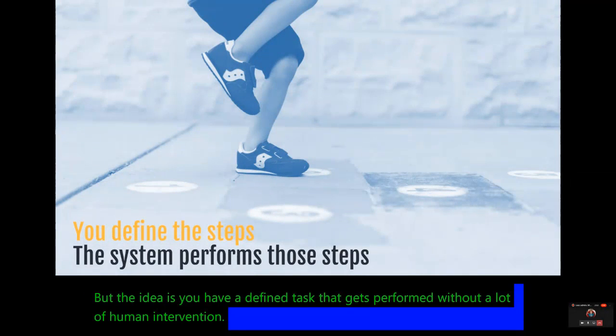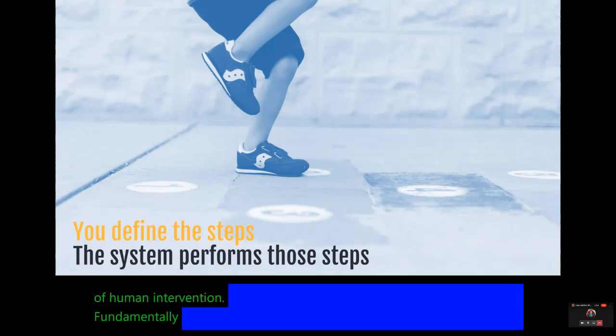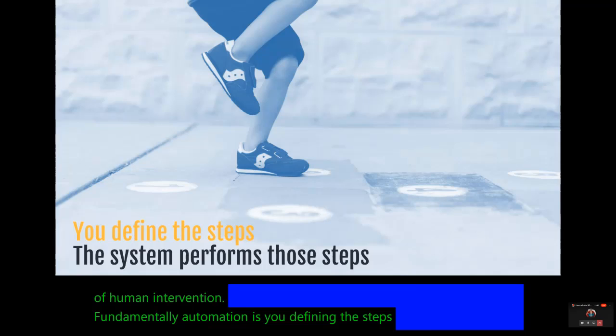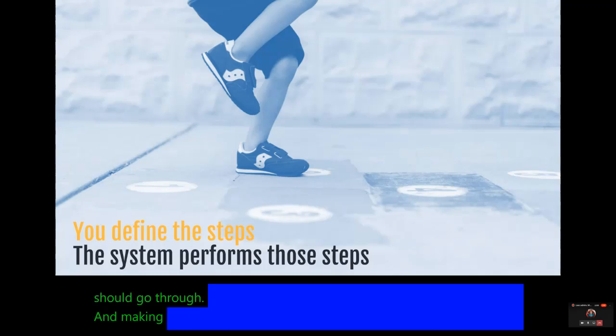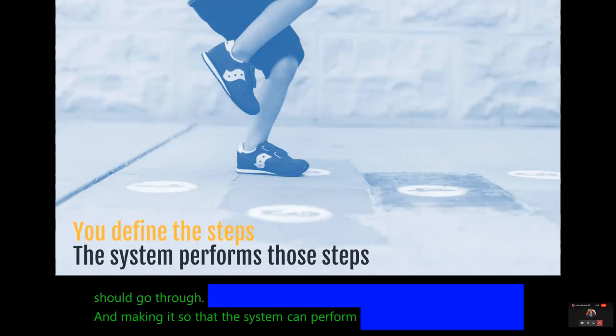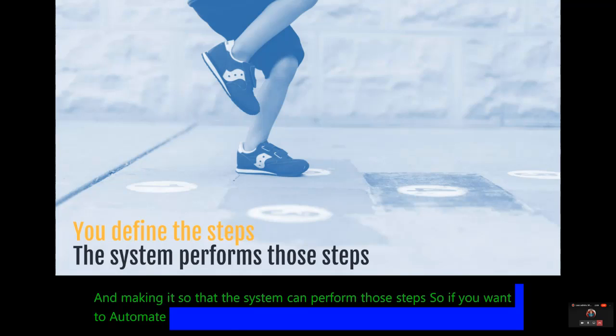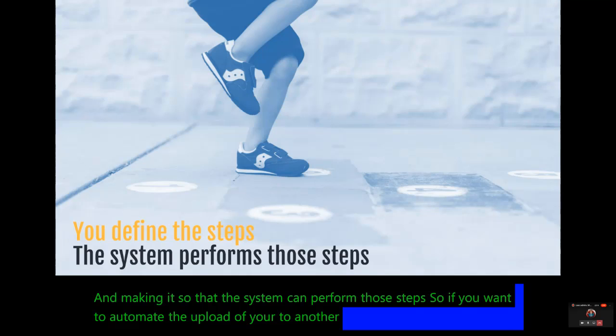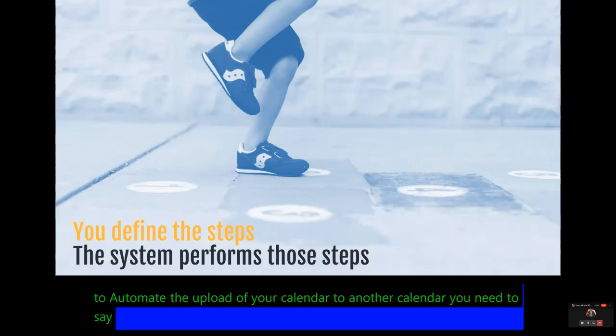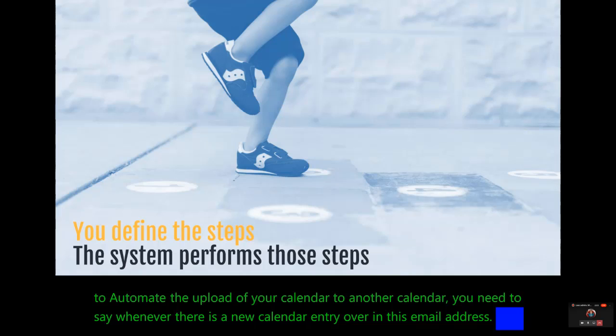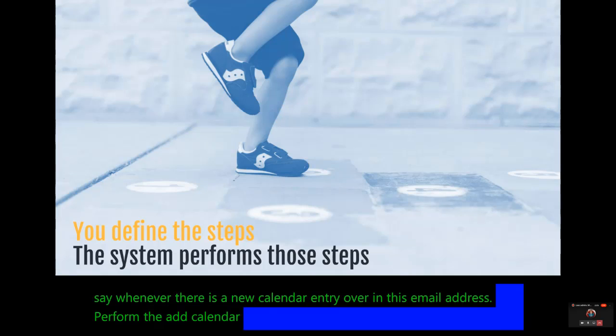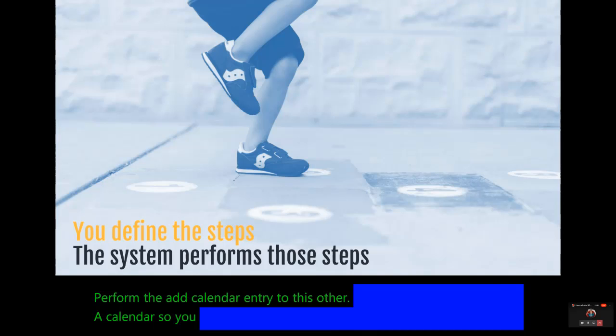Fundamentally, automation is you defining the steps that a process should go through and making it so that the system can perform those steps. So if you want to automate the upload of your calendar to another calendar, you need to say whenever there is a new calendar entry over in this email address, perform the add calendar entry to this other calendar. So you define the steps, the system performs those steps.